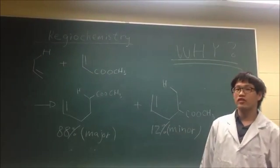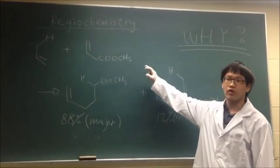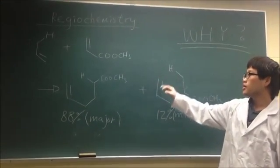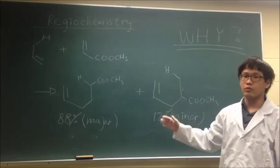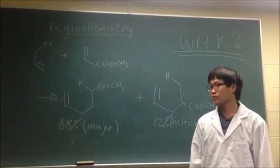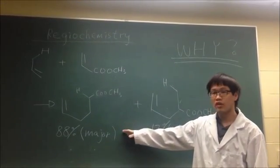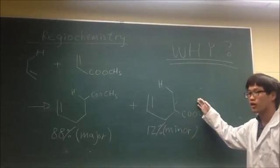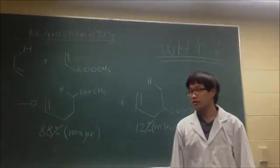But when there is an electron-withdrawing group in one of the alkenes here, this reaction becomes a regioselective reaction. And this becomes a major product, and this becomes a minor product. And you know the reason behind this.